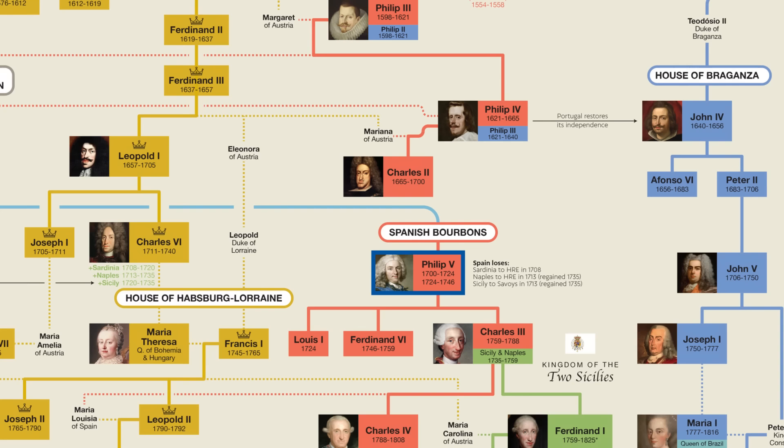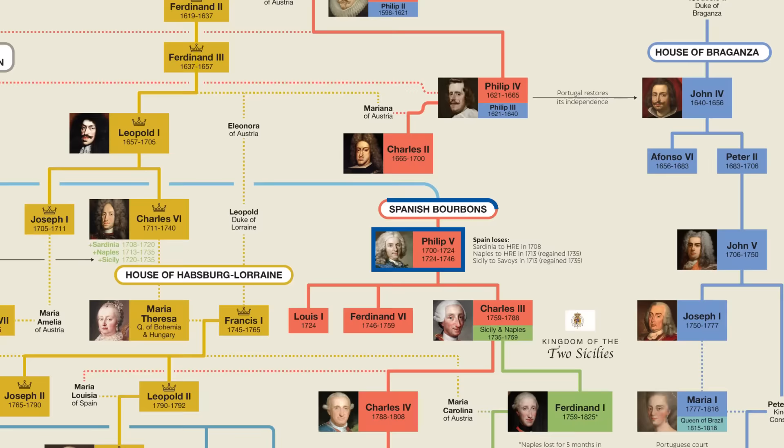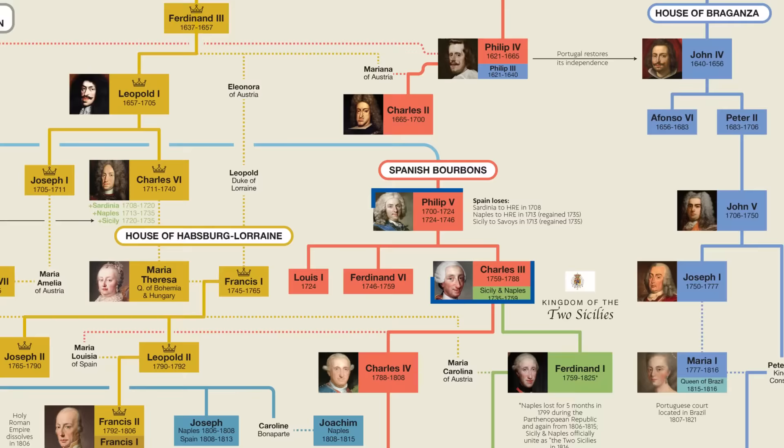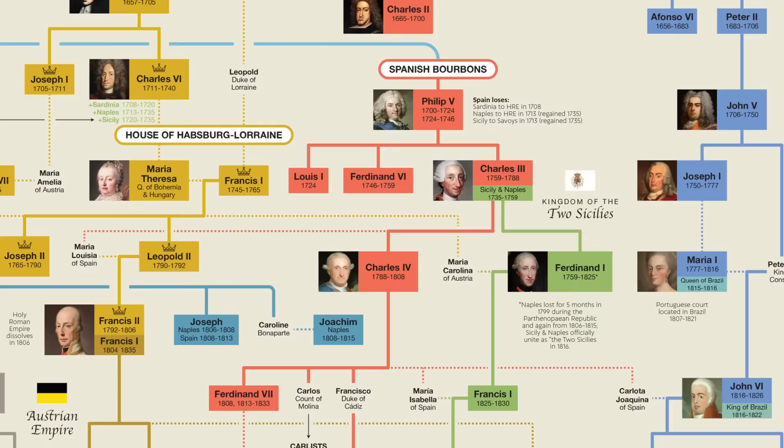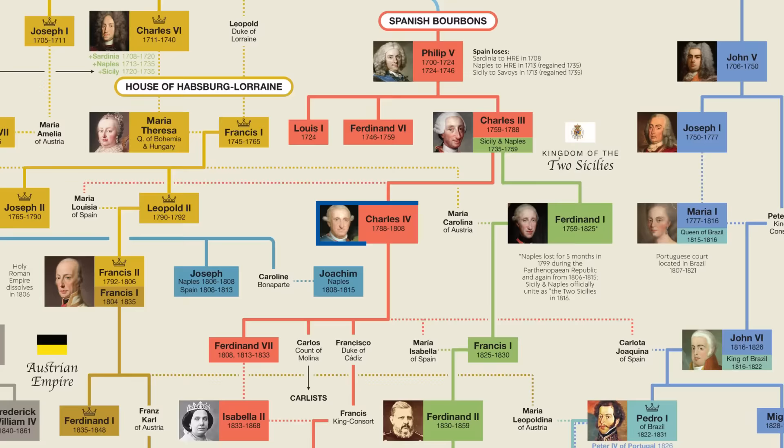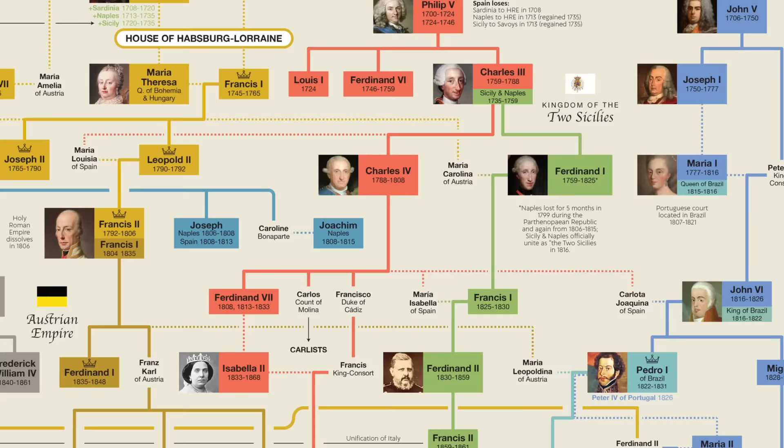Philip inaugurated the House of the Spanish Bourbons, which under the reign of his son Charles III went on to regain Sicily and Naples. However, after Charles III, the dynasty split off into two branches: one, under his son Charles IV, kept Spain, while the other, under Ferdinand, ruled the Kingdom of the Two Sicilies right up until Italian unification.